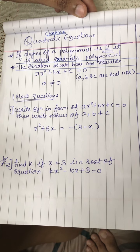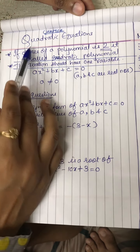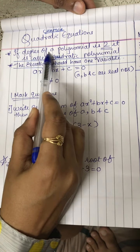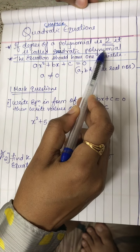We have already learned about polynomial in previous standard. Here, for the quadratic equation, the two conditions are: if the degree of polynomial is 2, it is called quadratic polynomial.